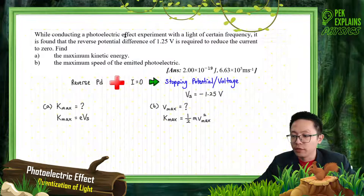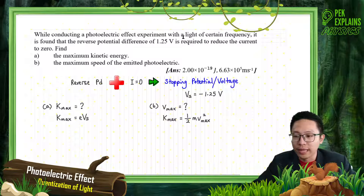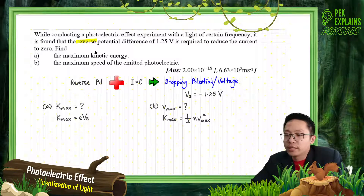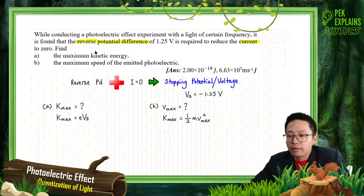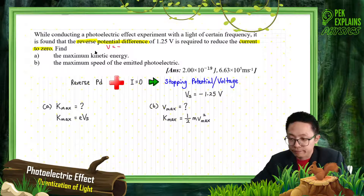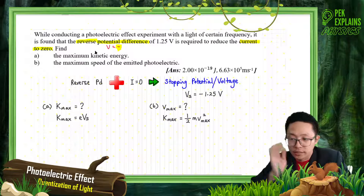While conducting a photoelectric effect experiment with light of a certain frequency, it is found that a reverse potential difference of 1.25V is required to reduce the current to 0. Reverse means the voltage becomes negative — the value is 1.25V.